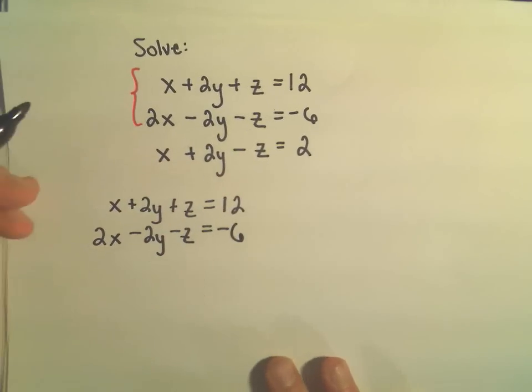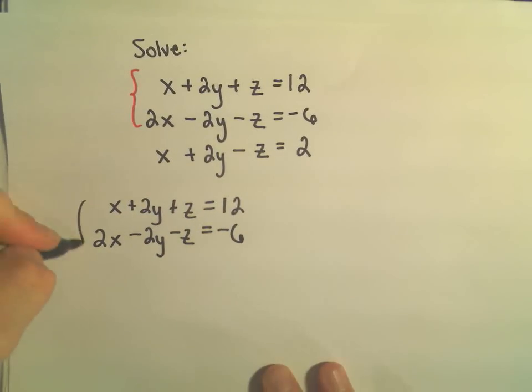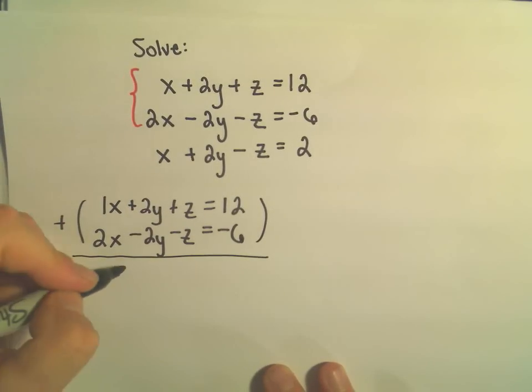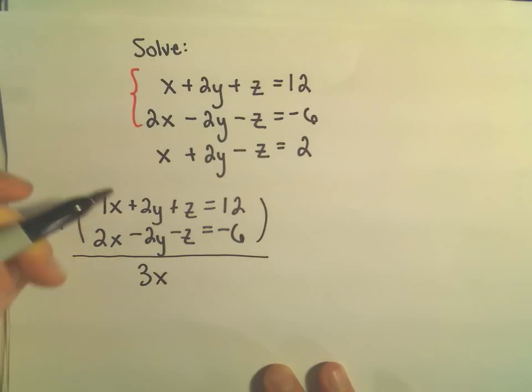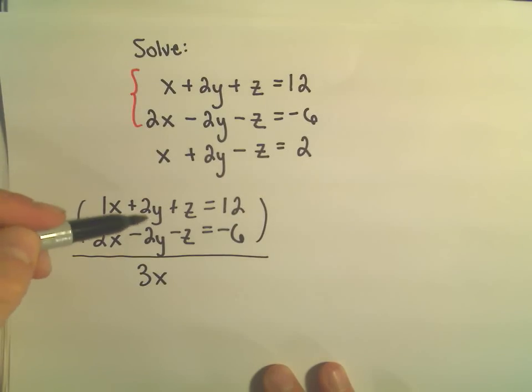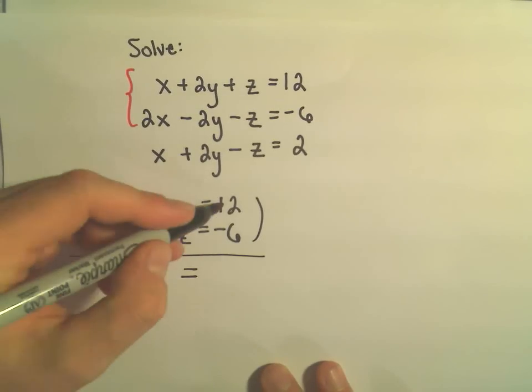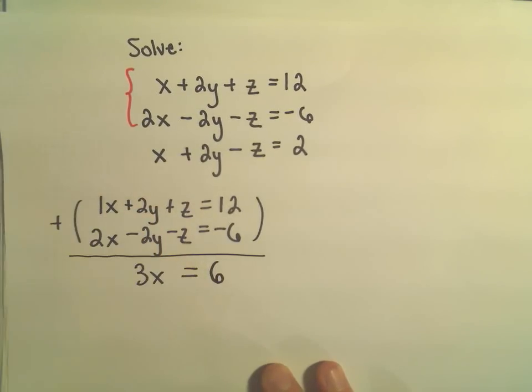But notice in this case, things are actually already pretty nicely set up so that if we add everything, the columns together, 1x plus 2x will just give us 3x. Notice the y's would cancel out, 2y, positive 2y minus 2y is 0y, positive z minus z is 0z, and then 12 minus 6 will leave us with positive 6.